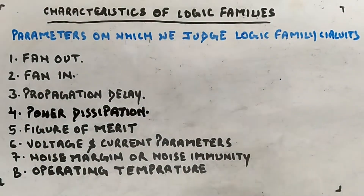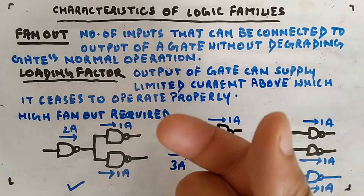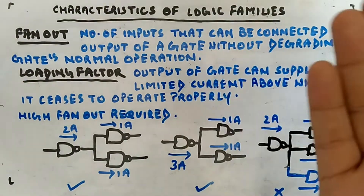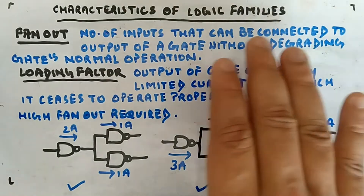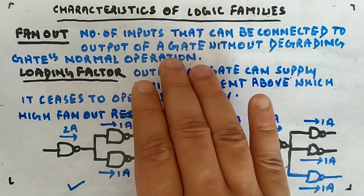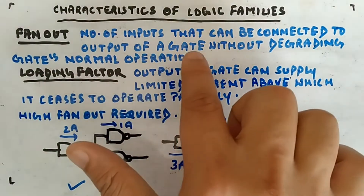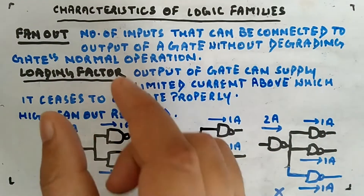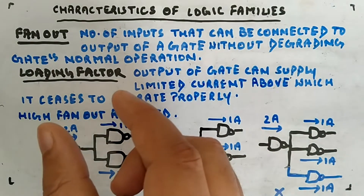The first parameter is fan out. Fan out is a property of a gate which drives another gate. It is defined as the number of inputs that can be connected to the output of a gate without degrading that gate's normal operation.